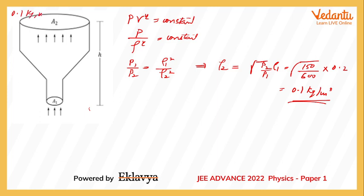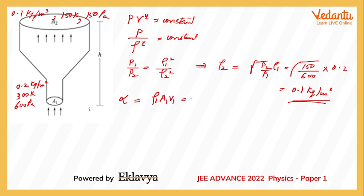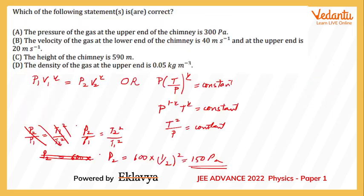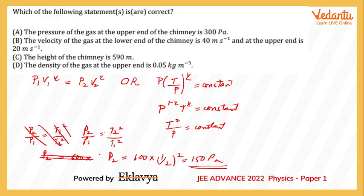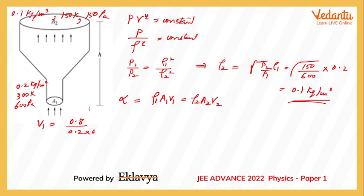So at the top: density = 0.1 kg/m³, temperature = 150 K, pressure = 150 Pa. At the bottom: pressure = 600 Pa, temperature = 300 K, density = 0.2 kg/m³. Now, using the equation of continuity — mass flow rate = ρ1·A1·v1 = ρ2·A2·v2 — we can find the velocities.